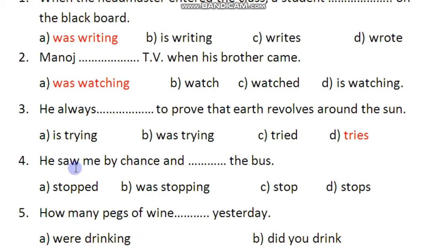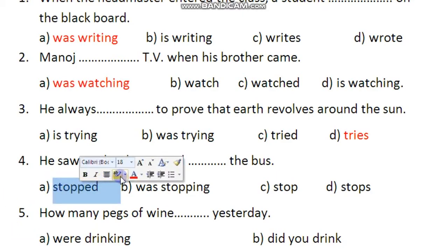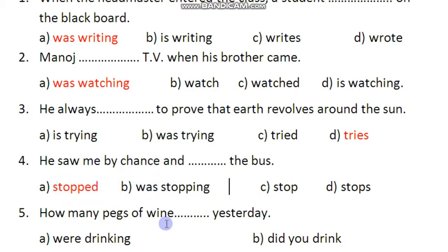Next: He saw me by chance and dash the bus. Looking at the options, the right answer is 'stop' — the first option — so he saw me by chance and stopped the bus.